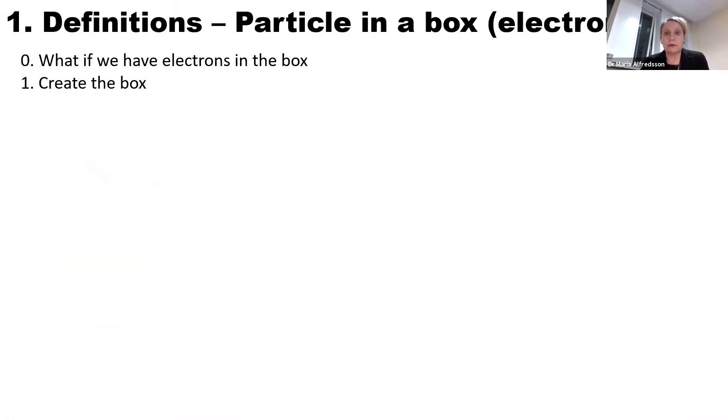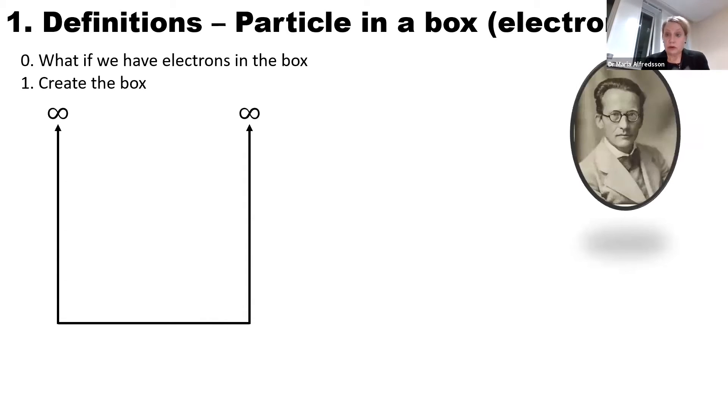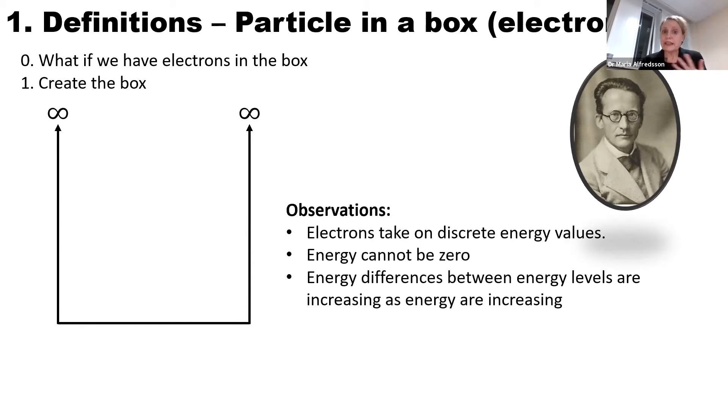What about if we go to an electron? We have to think a little bit differently. If we have an electron and we put it in a box, the first thing we have to do is create this box. Schrödinger and his colleagues found in the beginning of the 1900s that these particles, the electrons, they take specific discrete energy values. They can no longer take any energy they want.